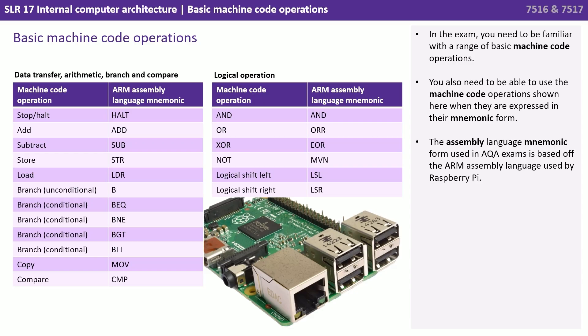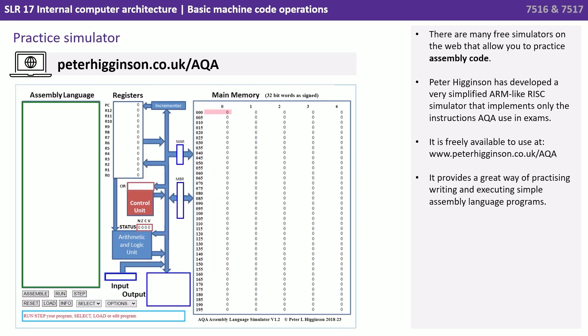The assembly language mnemonic form used in AQA exam papers is based off the ARM assembly language used by Raspberry Pi, and is shown here. There are many free simulators on the web that allow you to practice assembly code. Peter Hickson has developed a very simplified ARM-like RISC simulator that implements only the instructions AQA use in the exams. It is freely available at the following web address and provides a great way of practicing writing and executing simple assembly language programs.